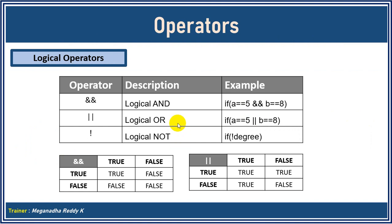If you see here, we have three logical operators: logical AND, logical OR, and logical NOT. We use these normally when writing conditions. For example, if I want to make sure this condition is satisfied AND this condition is satisfied, then only I proceed. In that case, we need AND — and means both conditions must be satisfied for it to go inside the condition.